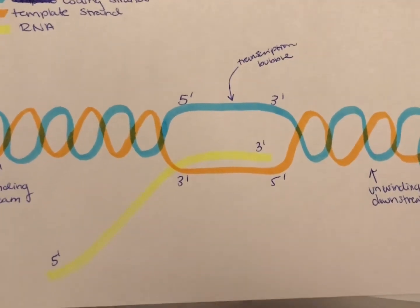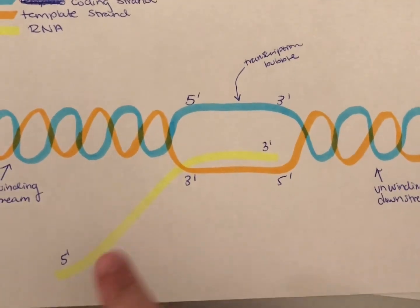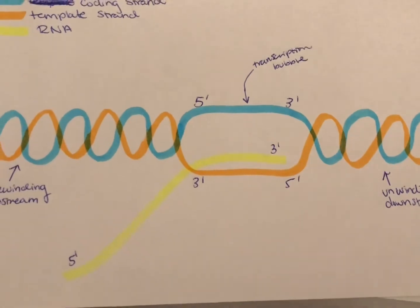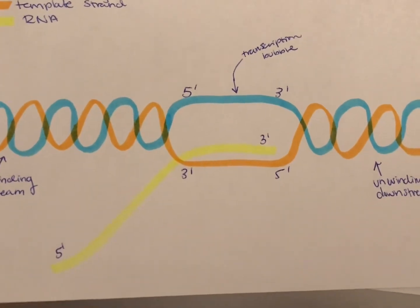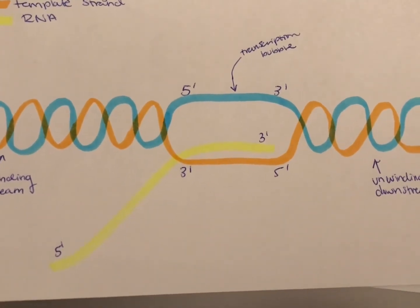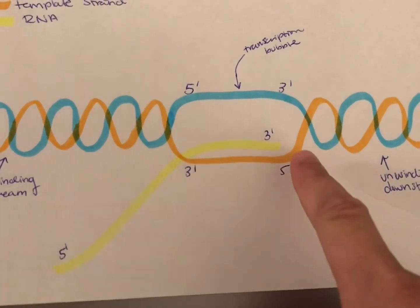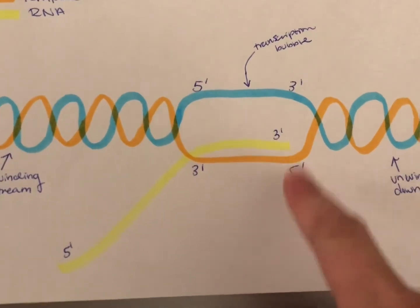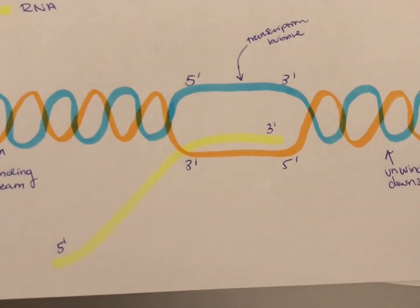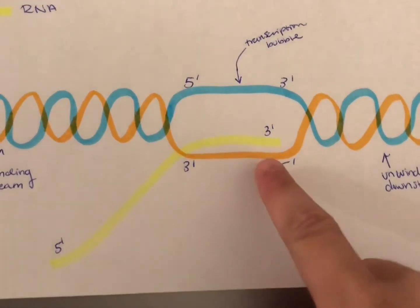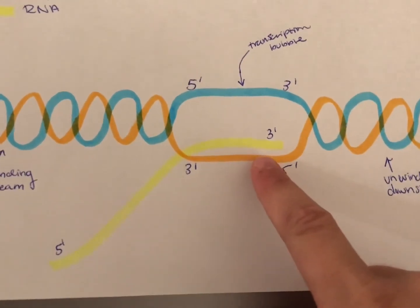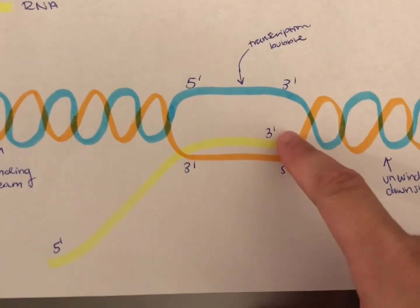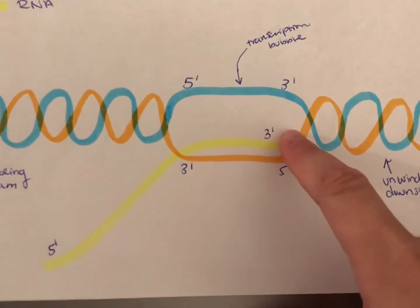Following initiation, we begin to have the elongation of our RNA strand. Elongation occurs in the 5' to 3' direction as seen here. The RNA is formed from the DNA template strand, seen here in orange, and nucleotides are added to this 3' prime end right here.